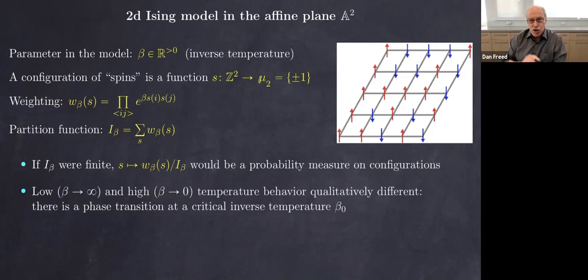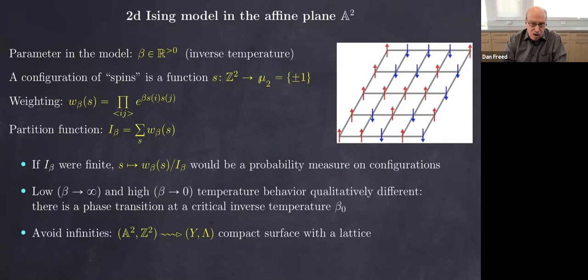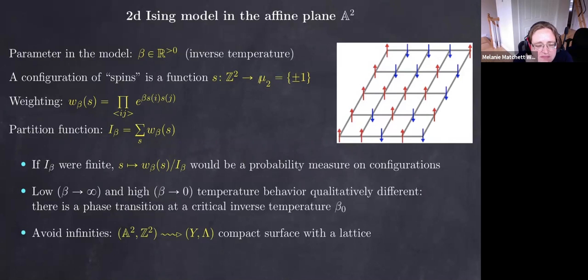...you get that measure concentrating on either all spins being plus one or all being minus one, whereas at high temperature the spins tend to be random and we get a more uniform measure. To avoid infinities, we'll replace the affine plane and infinite square lattice by a compact surface — a two-dimensional surface with a lattice inside — which then has a finite number of vertices and edges so all products and sums are finite.